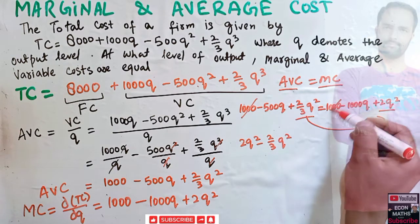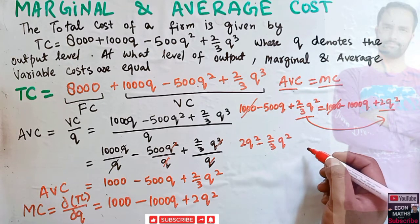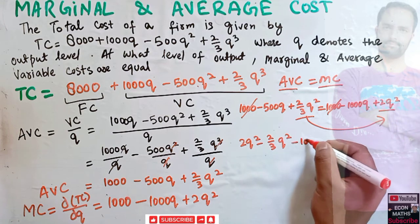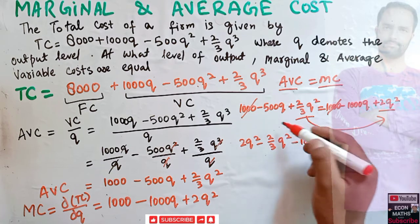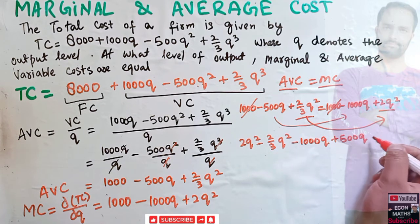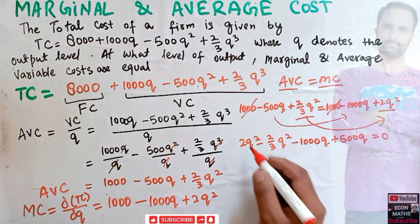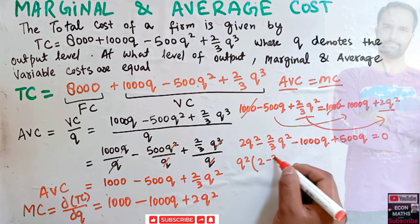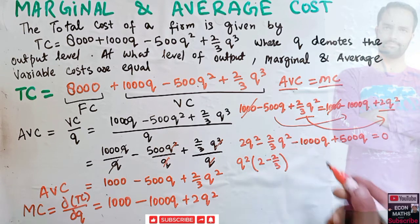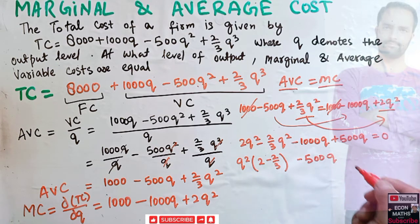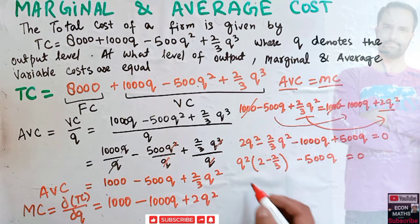The 1000 terms cancel. Transposing -1000Q gives +500Q on the left side, and we get: (2 - 2/3)Q² - 500Q = 0. Taking Q common: Q × [(4/3)Q - 500] = 0.